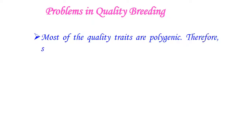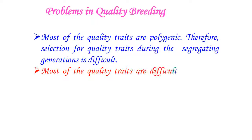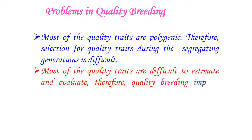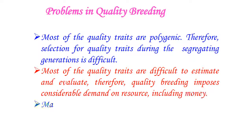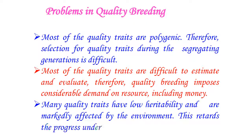Coming to problems in quality breeding: most of the quality traits are polygenic; therefore, selection for quality traits during segregating generations is difficult. Most quality traits are difficult to estimate and evaluate; therefore, quality breeding imposes considerable demand on resources including money. Many quality traits have low heritability and are markedly affected by environment, which retards progress under selection.